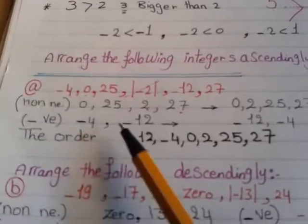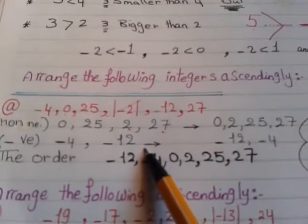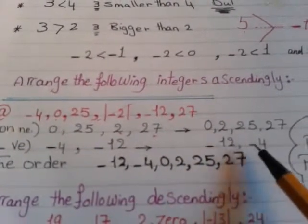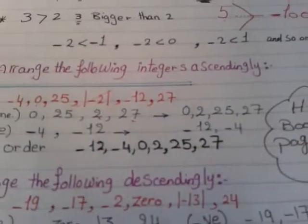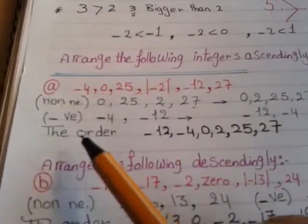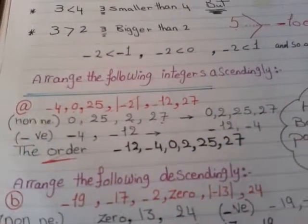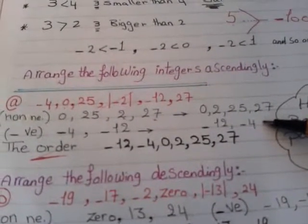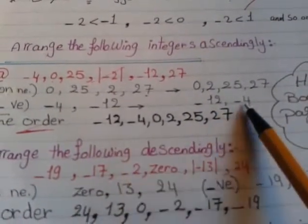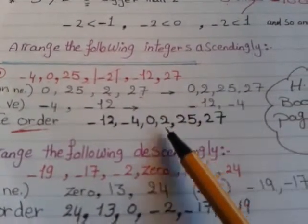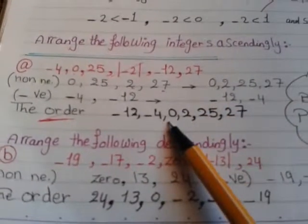Now arrange the negative numbers in ascending form. Negative 12 is smaller than negative 4, so the ascending order for negatives is: negative 12, negative 4. Now collect both groups together. Ascending means from smaller to bigger, and negatives are always smaller than positives, so the full ascending order is: negative 12, negative 4, 0, 2, 25, 27. Separate them, arrange them, then collect them — it's a very easy method.